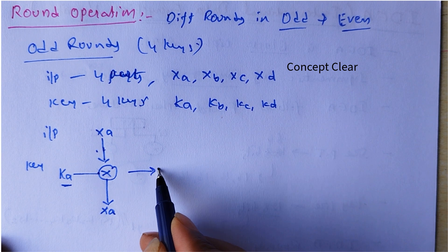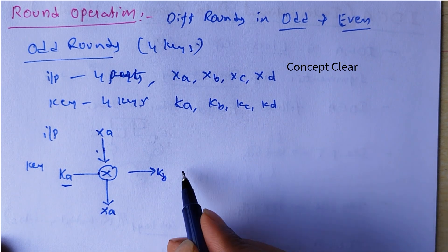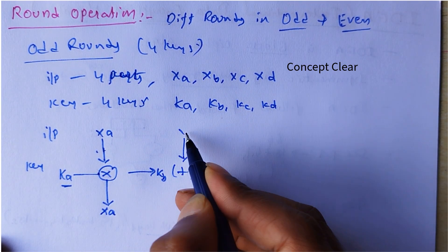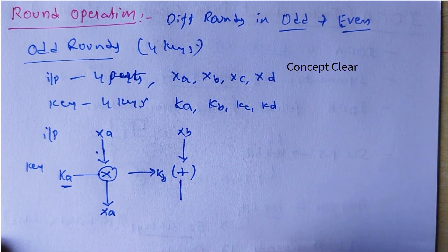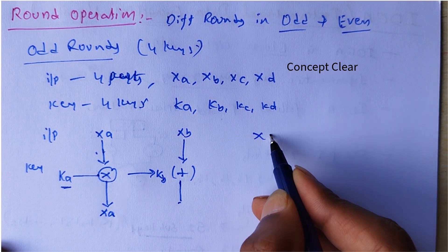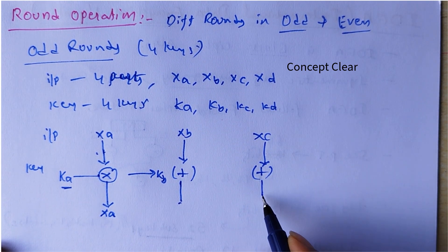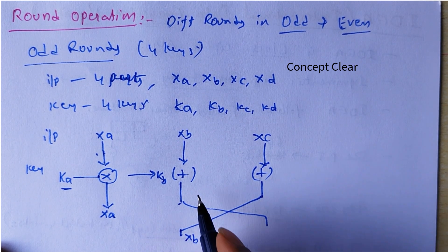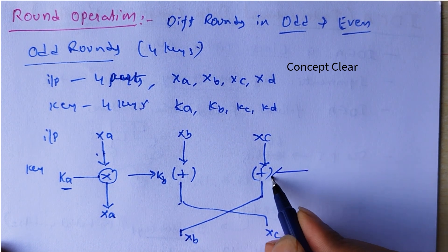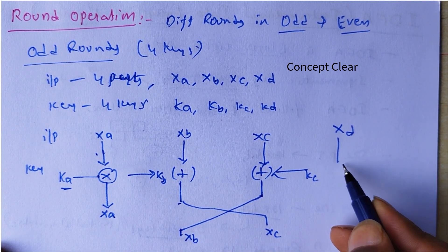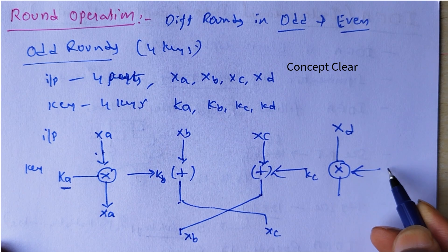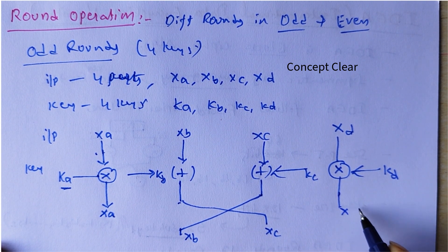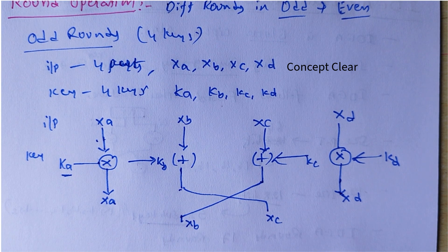KB key performs an XOR operation with XB to generate output XC. Then XC and XB are swapped. XD performs a special multiplication operation with key KD and produces XD. So in odd round operations, XB and XC swap their outputs while XA and XD work as usual.